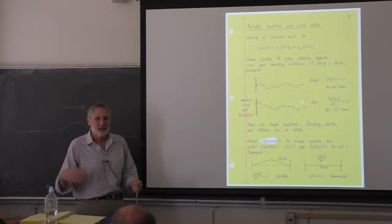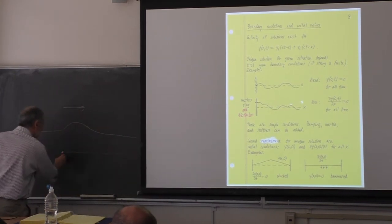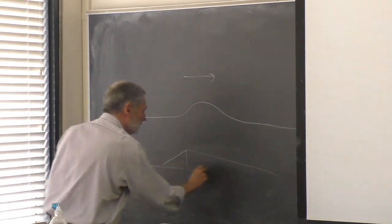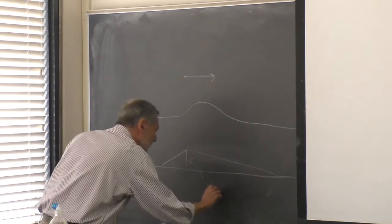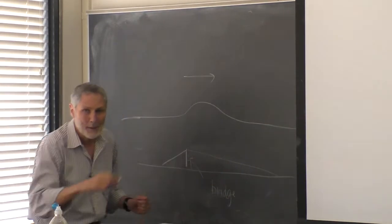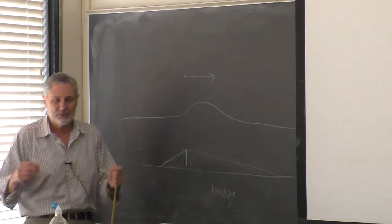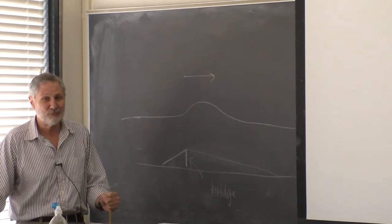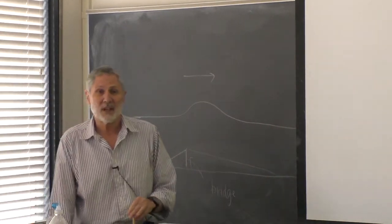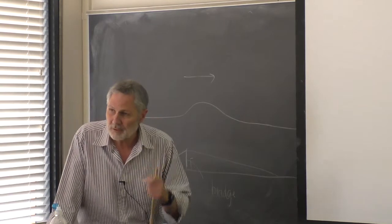Now let's do the free boundary case. Rather than going through the abstract math again, we can understand it directly from the method of images. For a free end, the boundary condition is zero slope for all time. The image pulse must be upright — the same as the incident pulse — placed symmetrically on the other side, creating an even function about the origin. An even function necessarily has zero slope there, enforcing the boundary condition.